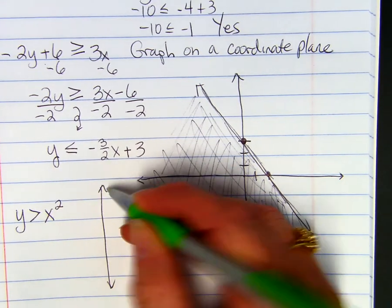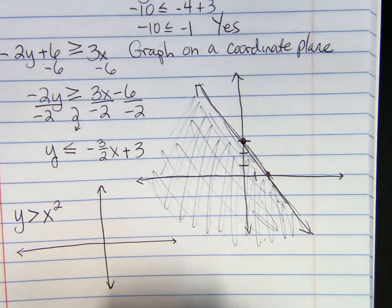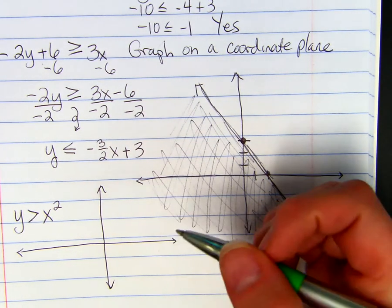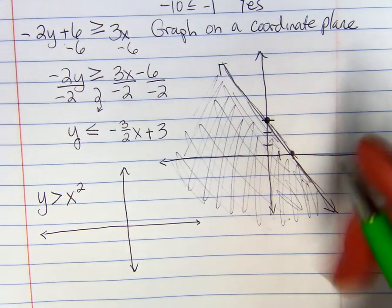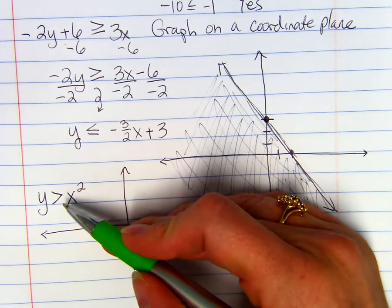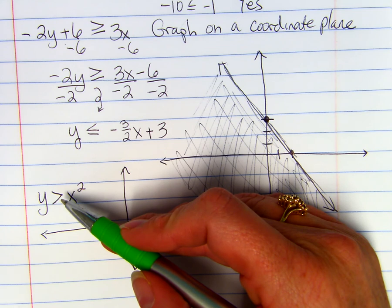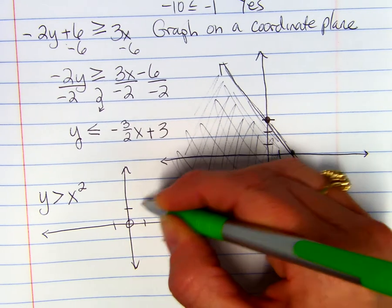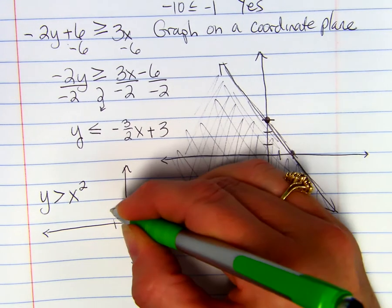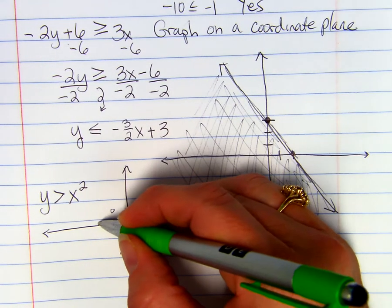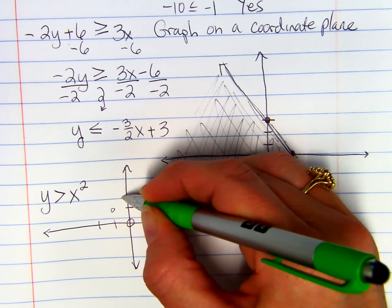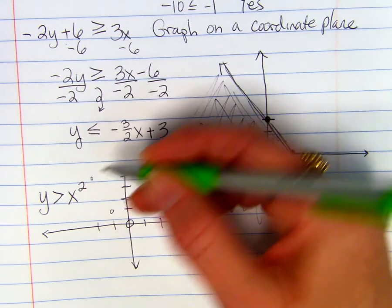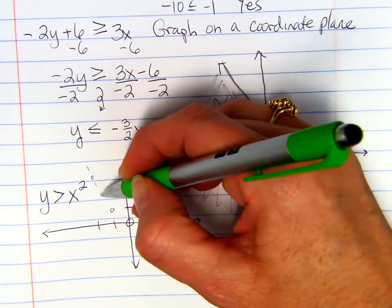So y is greater than x squared. And you guys know that x squared, this is like if it were equal to, it would be the parent function. So it's only greater than, it is not, or equal to, so we're going to have open circles. At one and negative one, it's going to go through the point, that point, and then two and negative two go through four on the y.